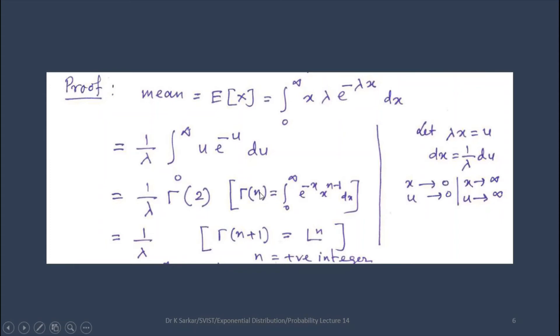Let us apply the property of the gamma function. Gamma n plus 1 equals factorial n. Here n is 1, so factorial 1 is 1. Therefore, the mean is 1 by lambda.